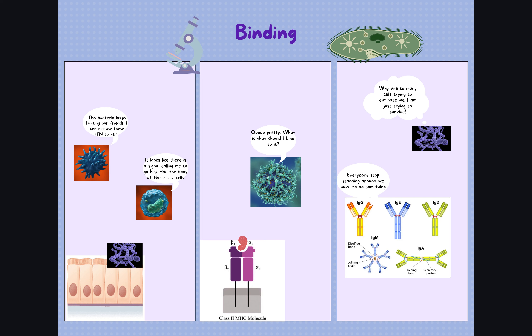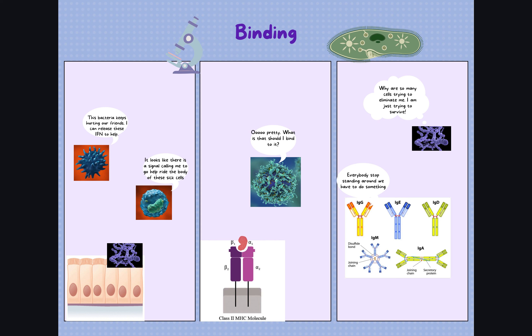Alternatively, if the CD4 cell differentiates and becomes a TH2 cell, we see antibody release. Especially for Strep pneumo, IgG and IgA are incredibly important. IgG is important for the elimination of the cell because it circulates systemically. IgA is incredibly helpful because it targets pathogens on the mucosal surfaces, and remember that Strep pneumo enters through the nasopharynx, so IgA is helpful for neutralizing the pathogen there. The antibodies act to neutralize the pathogen, which is important.